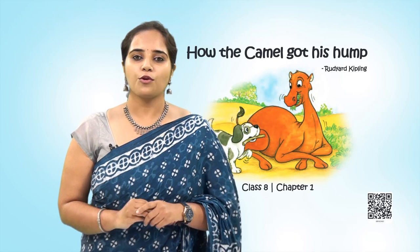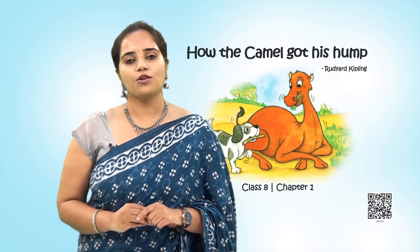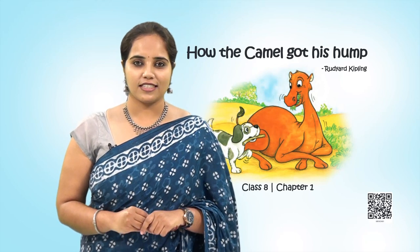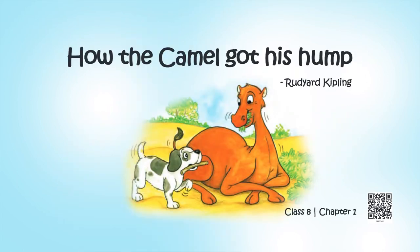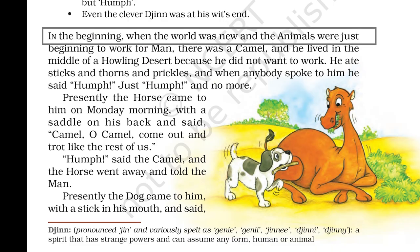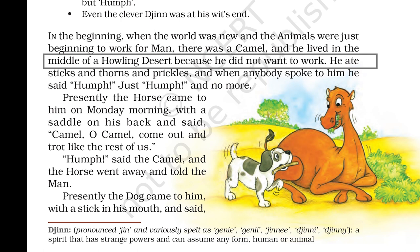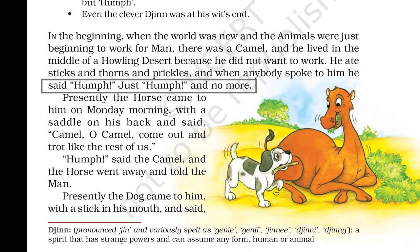You have an idea about what we are going to deal with in this unit, but you would also be curious to know how the camel who got his hump is connected to hard work. To know more, we should go through the text. In the beginning, when the world was new and the animals were just beginning to work for man, there was a camel and he lived in the middle of a howling desert because he did not want to work. He ate sticks and thorns and prickles, and when anybody spoke to him, he said 'Hump' — just hump and no more.